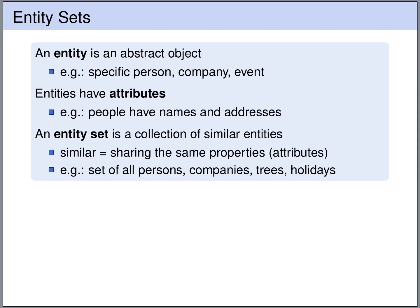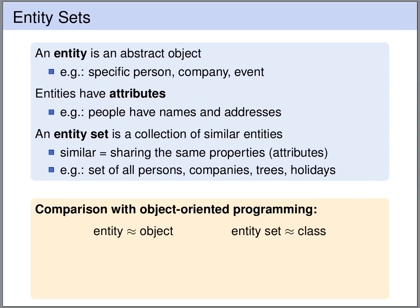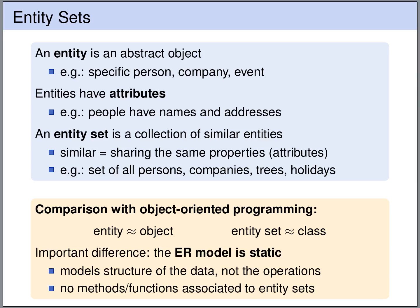For example, think of the set of all persons, the set of all companies, trees, and so on. We have an analogy with object-oriented programming. You can think of entities as objects and entity sets as classes. But there is one important difference: in entity relationship models we only model the structure of the data. We do not model the operations, so we do not have any functions or methods associated to entity sets — only attributes.